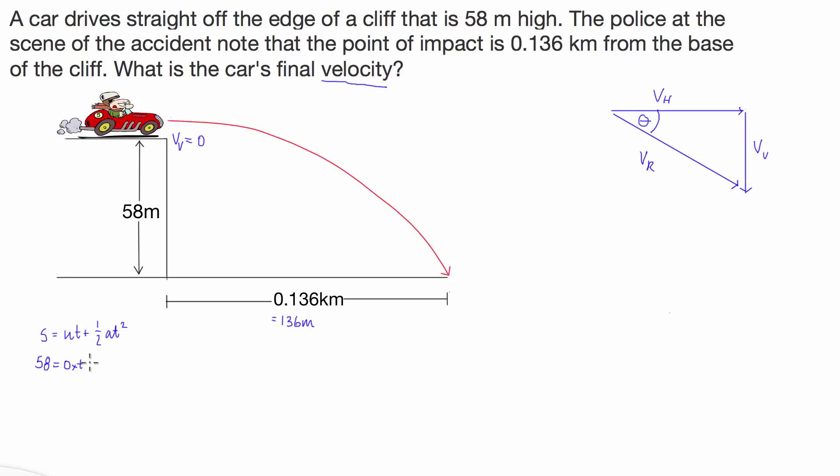The initial velocity we've already established is zero, so zero times time plus one half, acceleration is 9.8, and we've got time squared. Because we've got zero times t, that is going to cancel out, and so we have 58 is equal to one half 9.8 t squared.